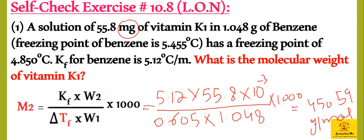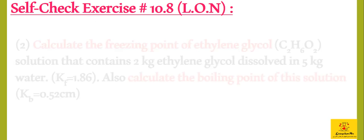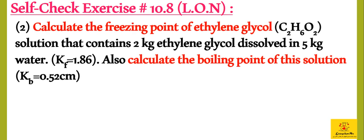So this was simple — we directly put in values. The next part: calculate the freezing point of a solution that contains 2 grams of ethylene glycol dissolved in 5 grams of water. We have both solute and solvent mass given, Kf given, and Kb given. So we have to find both freezing point and boiling point.